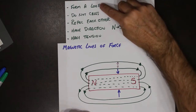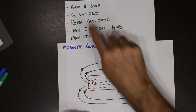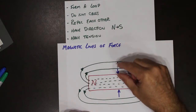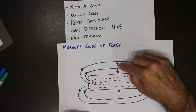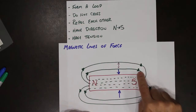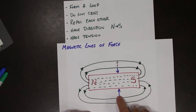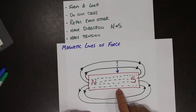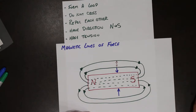To summarize: magnetic lines of force form a loop, they do not cross, they repel each other, they have direction, and they also have tension. Those are the five characteristics for Michael Faraday's magnetic lines of force.